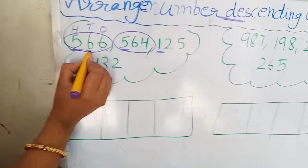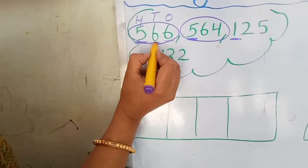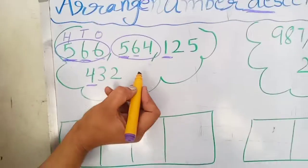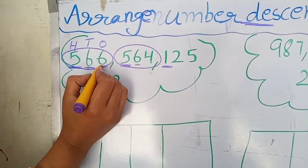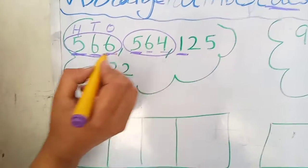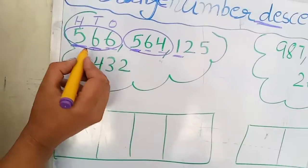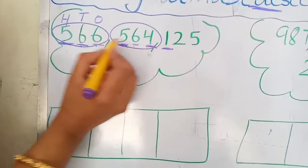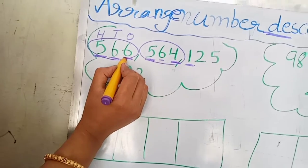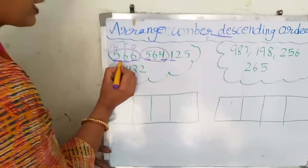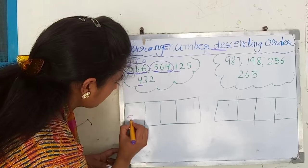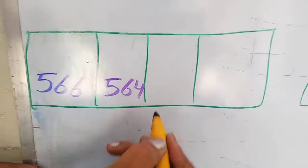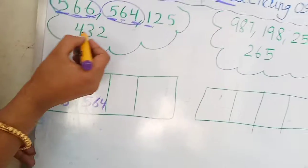Since the hundreds are equal (five equals five), we check the tens. The tens digits are six and six — also equal. So we check the ones: six and four. Which is the biggest number — 566 or 564? Here four is here and six is here, so six is bigger than four. So first we write 566 and then 564.